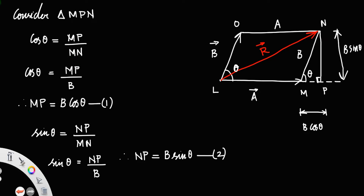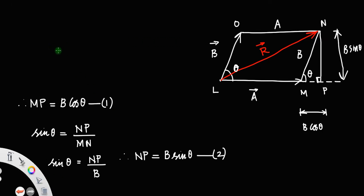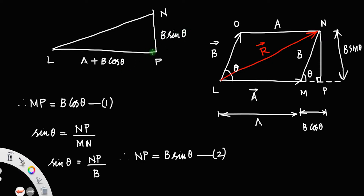Now consider the large triangle LPN. We have LP equal to LM plus MP, which is A plus B cos theta, the magnitude of vector A. And NP is B sin theta. The angle at P is 90 degrees. The length LN represents R, the magnitude of the resultant vector R.